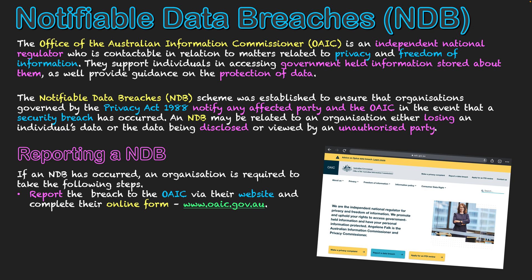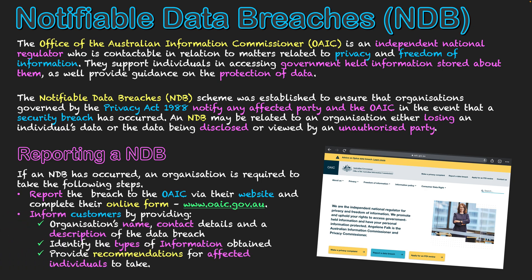The second group that needs to be reported to is the people who are affected — the customers. They need to be informed. So the organization needs to give their name, their contact details, and a description of the data breach. Essentially, they need to be contactable by their customers so customers can find out more information about the data breach, and identify the types of information that were obtained.